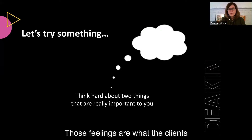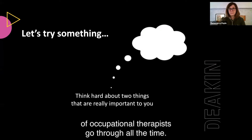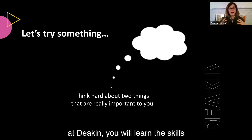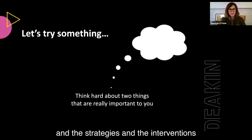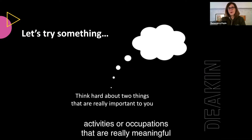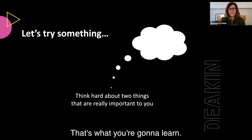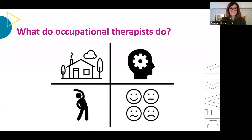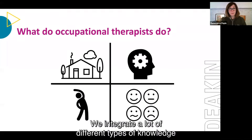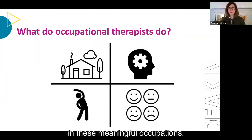Those feelings are what the clients of occupational therapists go through all the time. As an occupational therapist, that's where you come in. At Deakin, you will learn the skills, strategies and interventions to help people go back to these occupations and activities that are really meaningful and important to them. That's what you're going to learn and that's how you're going to have an impact on your client's life. We integrate a lot of different types of knowledge to get people back to engaging in these meaningful occupations.